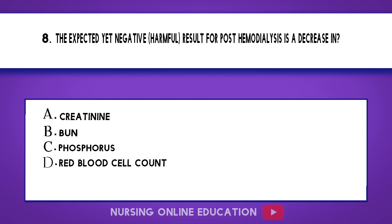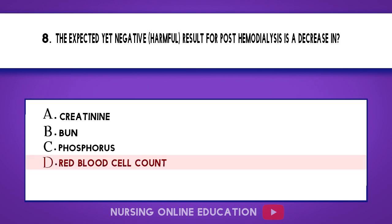Question 8. The expected yet negative, harmful result for post-hemodialysis is a decrease in: A. Creatinine. B. BUN. C. Phosphorus. D. Red blood cell count. The answer is option D: Red blood cell count.